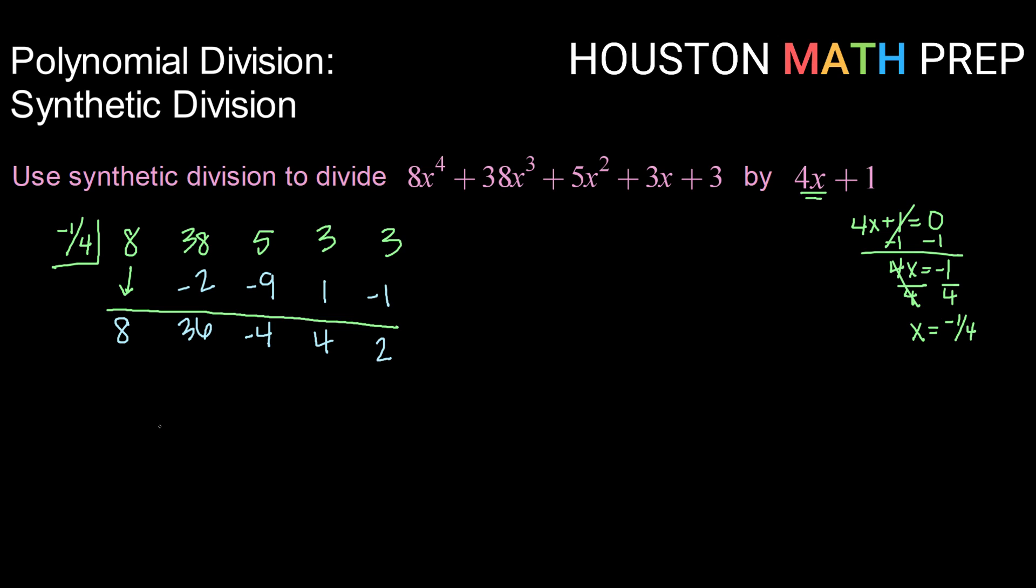At this point, normally we would have our remainder here, and all of these other numbers would be our coefficients in our answer. But because we have this difference of having the 4 in front of the x, we have to take an additional step of dividing each one of these coefficients by that 4 that was in the front.